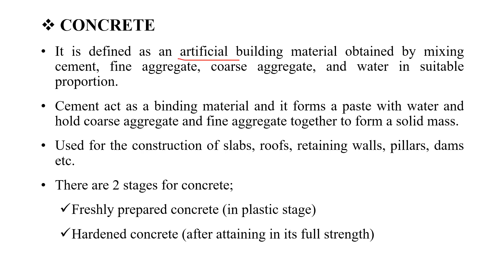Concrete is a binding material and an artificial material. We form the concrete using cement, fine and coarse aggregate, and water. We add cement as the binding material, form a paste with water, and combine it with coarse and fine aggregate to form a solid mass.